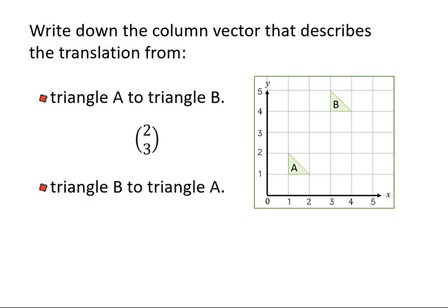To get from triangle B to triangle A, we're going in the opposite direction. And so therefore we're going two left and three down. So all of these have two to the left, but only these two have a three. And only this one represents down because this is up three. Therefore, we have minus two, minus three.